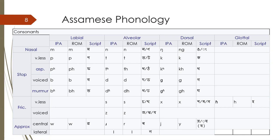The 'dantya' and 'murdhannya' series have the same sound in Assamese. Assamese therefore has many more consonant symbols than are actually needed to write the sounds of the language. There are three symbols written with 'x' in the IPA which go back to three distinct sounds in Sanskrit, but in Assamese they are all pronounced the same. Similarly, the sibilants were two distinct sounds in Sanskrit and are still distinct in Hindi, but they have merged into a single sound in Assamese.